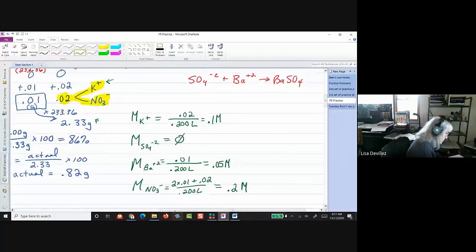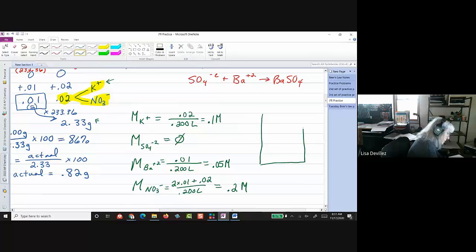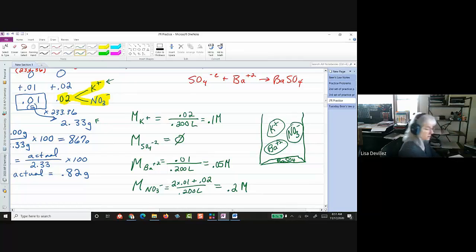Okay. Okay. So, going over. So, here's my beaker. And then, in the bottom is my barium sulfate. And then, I'm going to have potassium ions in solution. I'm going to have barium ions in solution. And I'm going to have nitrate ions in solution.